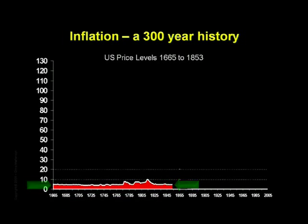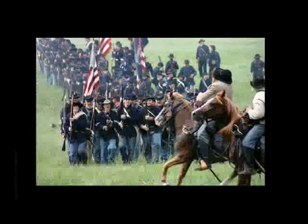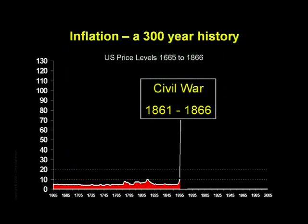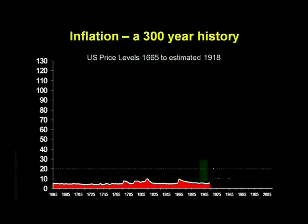Then the Civil War came along, and it was a doozy. To finance the war, the North had to resort to printing a type of currency that still lends its name to our own currency today — the greenback. Again, we see a rapid rise of inflation as a direct consequence of war, and again a return to baseline after the crisis is over. We are now 250 years into this story, and the cost of living is still roughly the same as it was at the start.